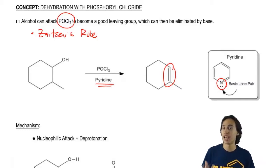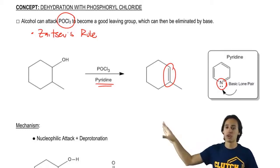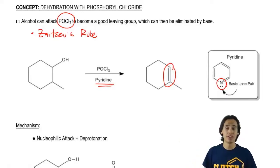So in terms of the general reaction, as long as you just know that those two reagents with alcohol give you a Zaitsev double bond, that's great.